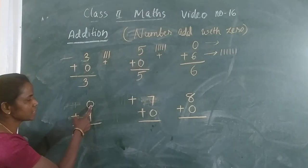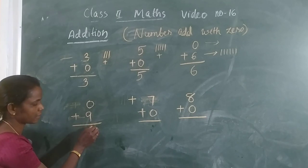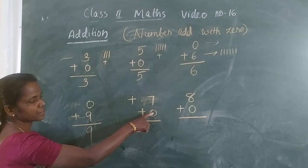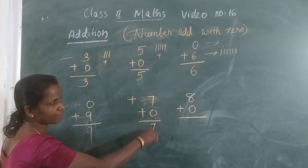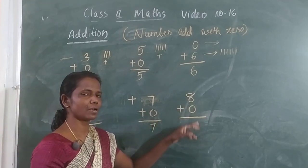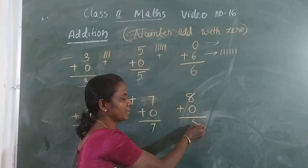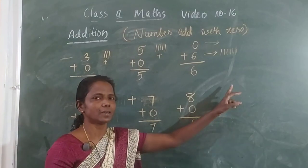Is it clear? Then 0 plus 9? Which number? 0 plus 9? 9. 7 plus 0? 7. 8 plus 0? 8. Then 11 plus 0? 11.